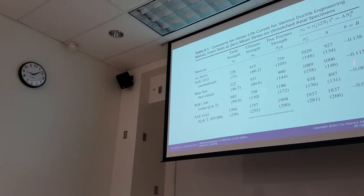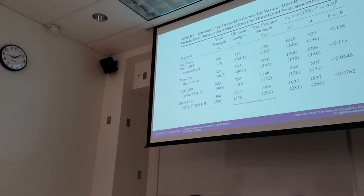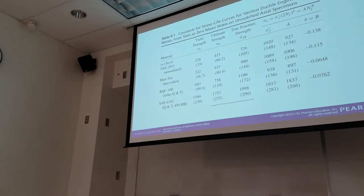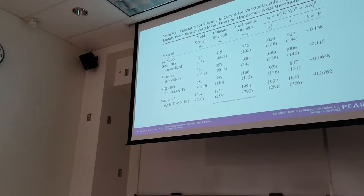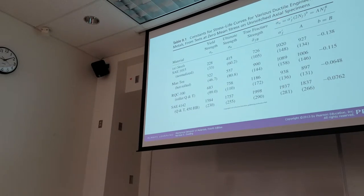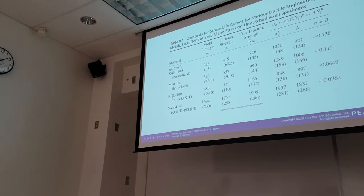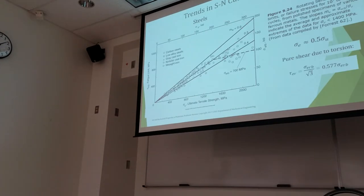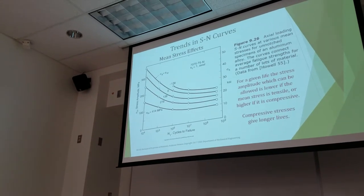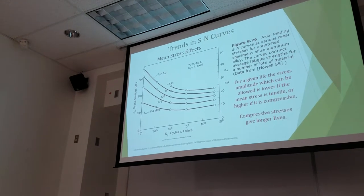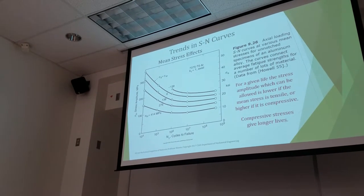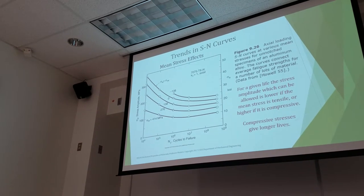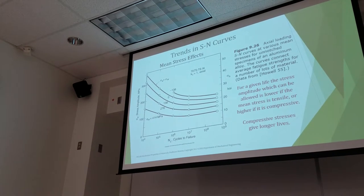So those are our design equations that we use to predict cycles to failure. But notice in those design equations, only the fully reversed stress amplitude is included. So when we get to our mean stress effects again, we need to somehow feed those back into those stress life equations. We need to figure out how we're going to do that.